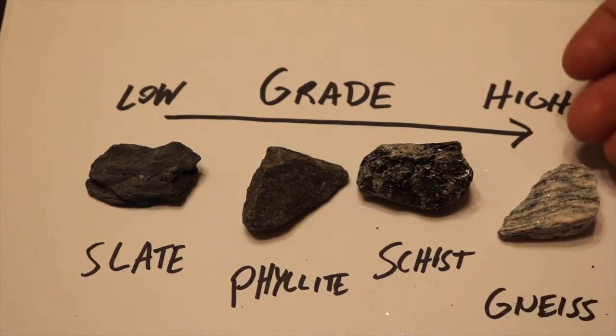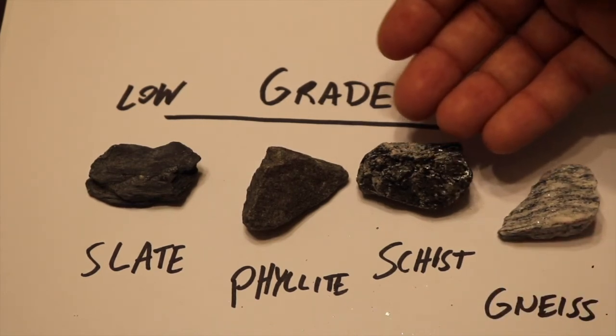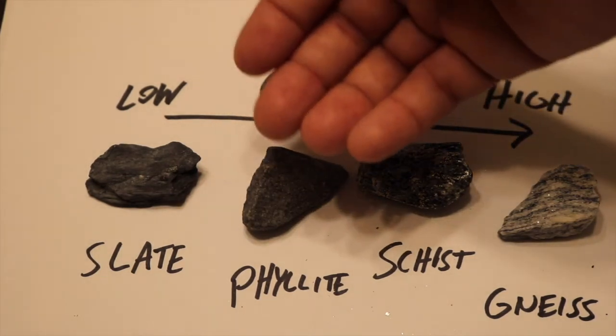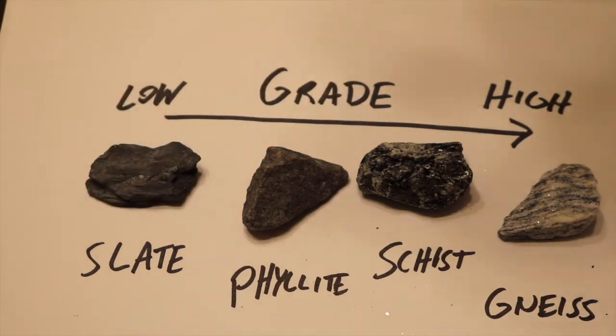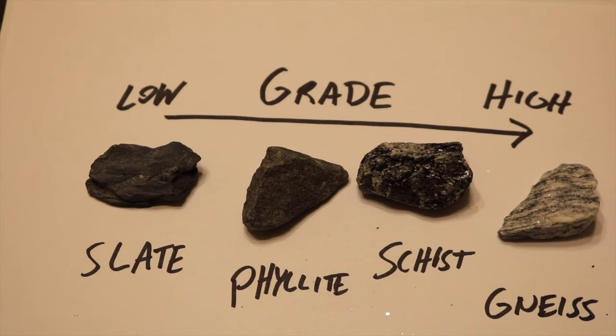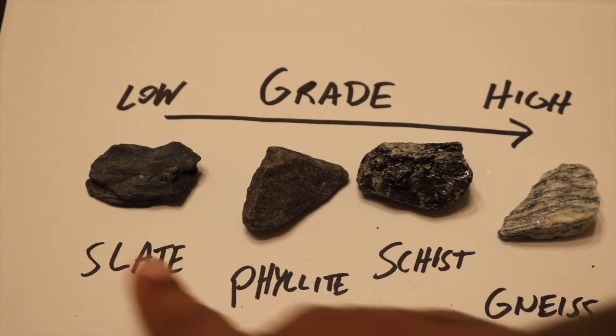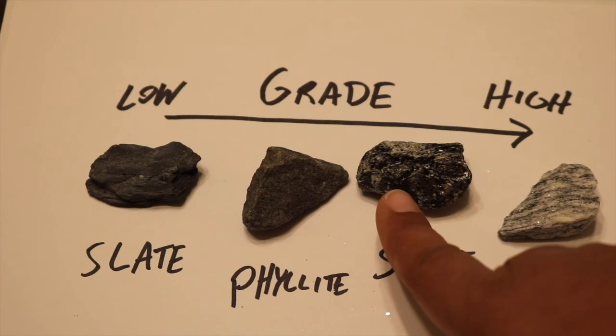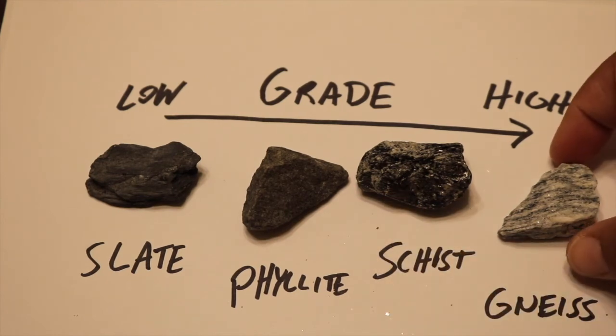Gneiss has similar minerals that are found in schist, schist has similar minerals found in phyllite, and phyllite has similar minerals found in slate. Essentially, all four of these rocks could have had a similar protolith, especially if you don't have any other index minerals like staurolite or garnet or kyanite. But all these, for the most part, contain similar compositions that you can find in something like muscovite and biotite.